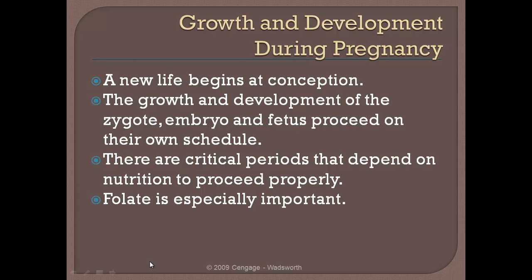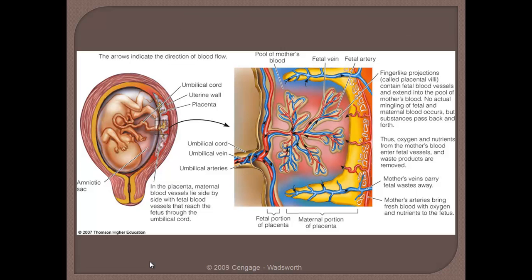We're going to talk about critical periods, and we'll talk a lot about folate, which is absolutely imperative to appropriate fetal development. Looking at Figure 14-1, it's very important to understand that the placenta does not involve sharing of a blood supply between the fetus and the mother. You can see the umbilical cord with its arteries and veins, and at no time do these connect to the maternal blood source. The placenta is an organ that allows transfer of oxygen and nutrients without transfer of blood from the mother to the fetus.